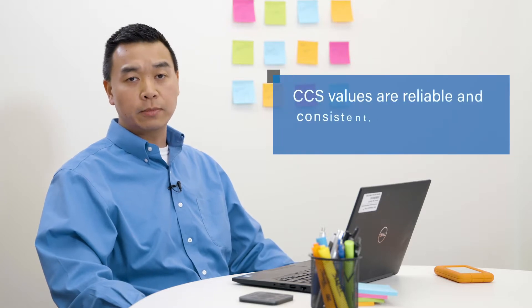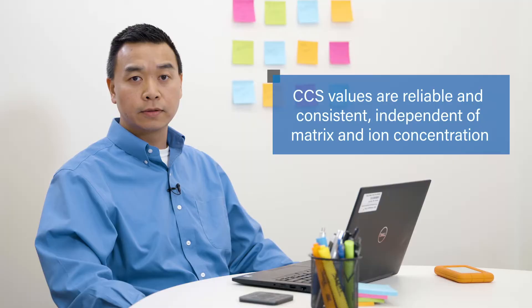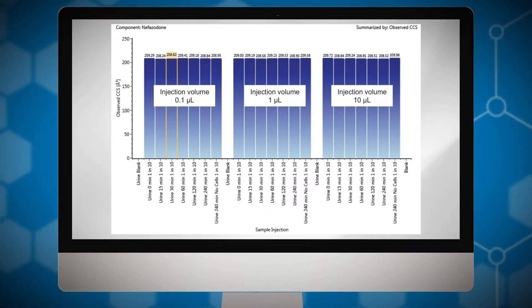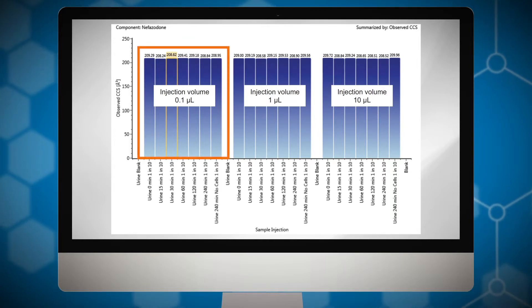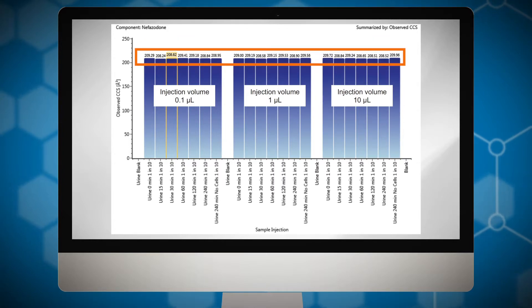CCS values are reliable and consistent independent of matrix and ion concentration. In this figure, we can see a trend plot of CCS for nifazodone throughout an incubation experiment. Over the time course, nifazodone varies significantly in concentration over three orders and is present in a complex matrix. However, the CCS value is consistent. The percent RSD over the 250-hour experiment was 0.2%.